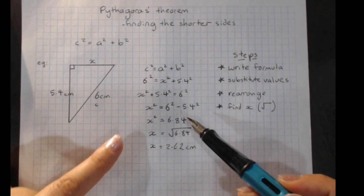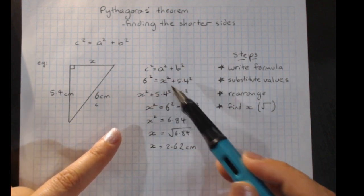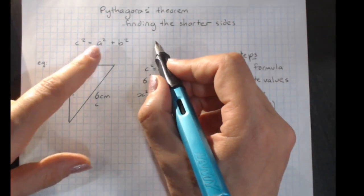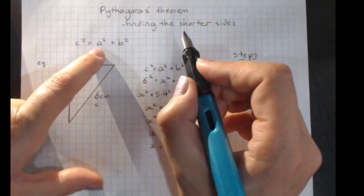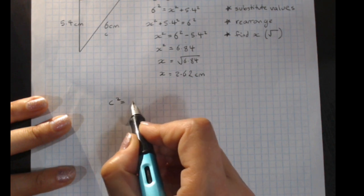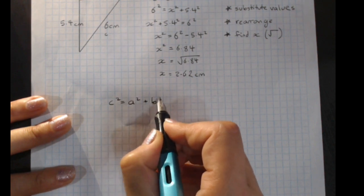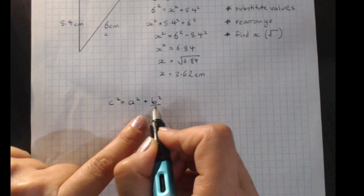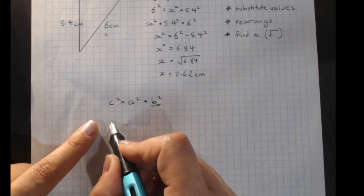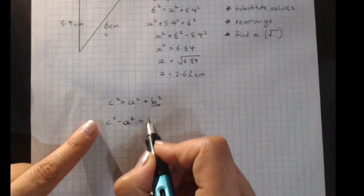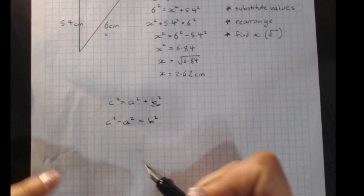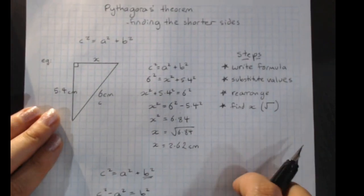So there's a little bit more working because we've got to rearrange the formula once we've substituted values in. You could rearrange before you started if you want. So I'll just do that down here. You don't have to if you don't feel comfortable rearranging. C squared equals a squared plus b squared. But let's say we want to solve for b squared. We want to get it on its own. We need to take away a squared from both sides. C squared minus a squared equals b squared. So a short side squared is the hypotenuse squared minus the other short side squared. You could do that before you started.